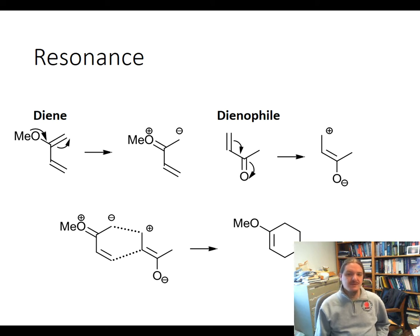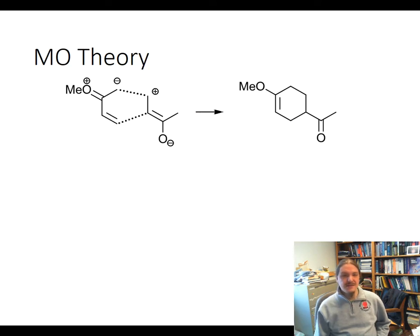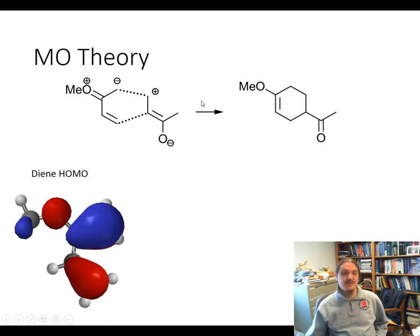Drawing it not with all of the formal charges and everything, but fixing up all of the resonance structures. So then, here is a different view looking at it from molecular orbital theory. Now, molecular orbital theory doesn't need resonance because molecular orbital theory delocalizes the electrons. But it turns out that the molecular orbital theory explanation is complementary to the resonance explanation.